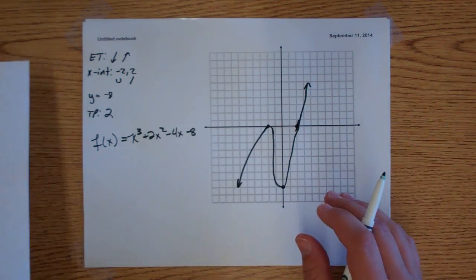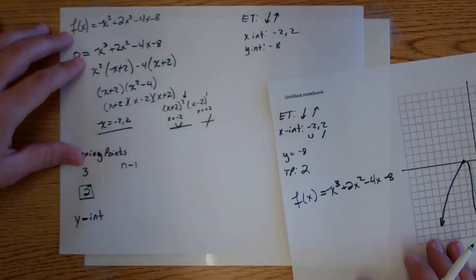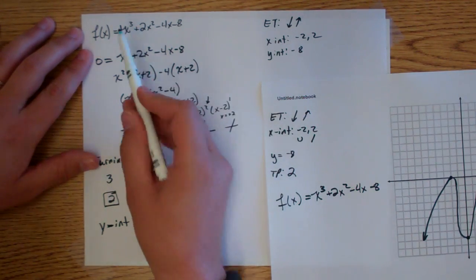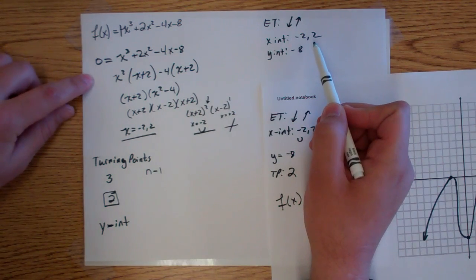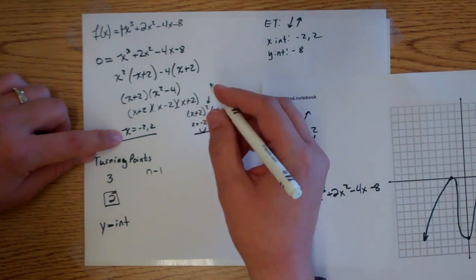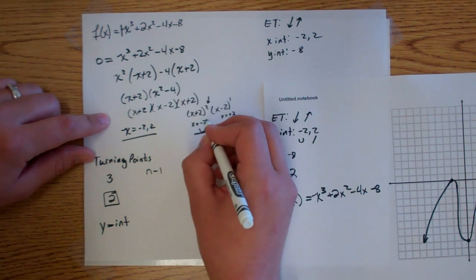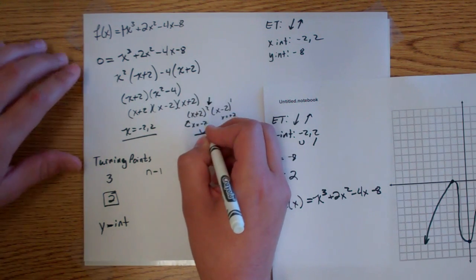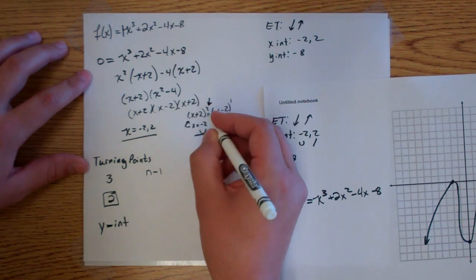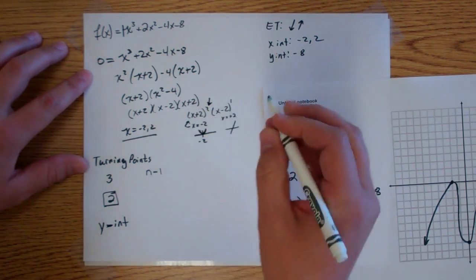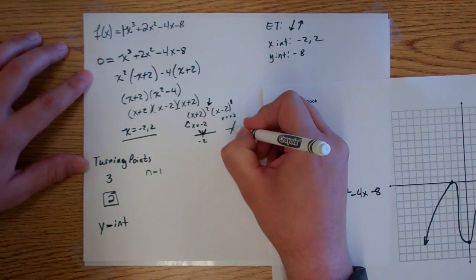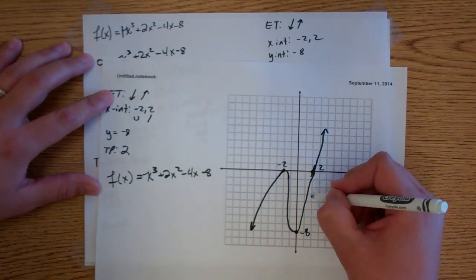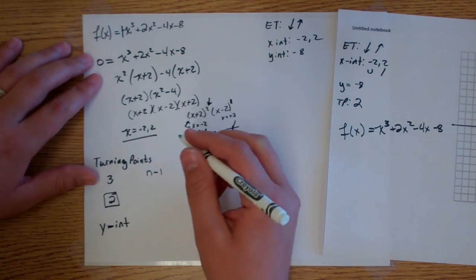Let's go over this again. First, look at your degree and leading coefficient — here it's positive 1, odd, so it goes down, up. Next, find your intercepts: set equal to 0 and solve. When you find a zero from a factor with an even exponent — like x plus 2 squared — it's going to turn at that x-value. If the zero comes from an odd exponent, it passes through. That's called multiplicity.